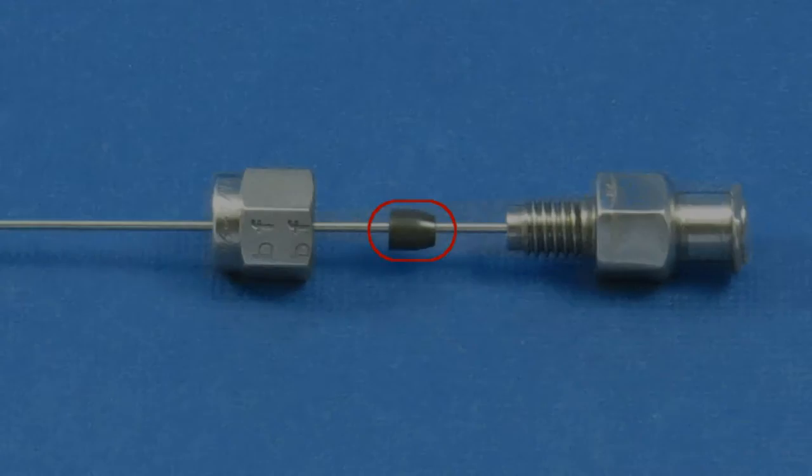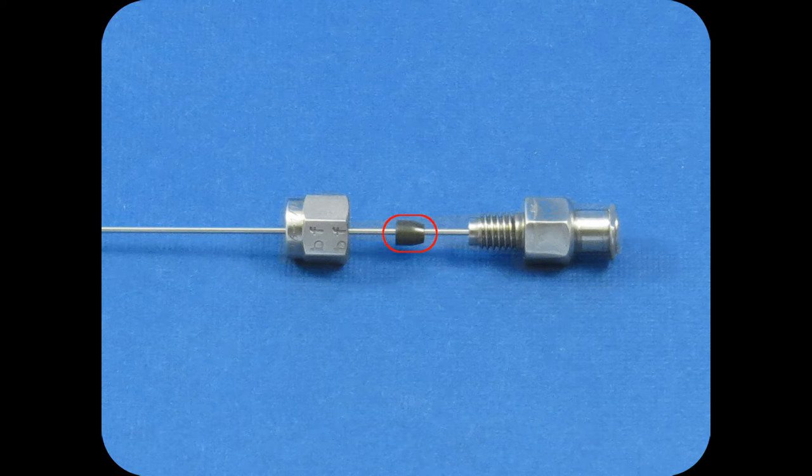Then, choose the correct hypodermic tubing adapter ferrule to make the connection. Remember, not all sizes of hypodermic tubing can be used with all ferrules, so if you have any questions about which one to select, our hypodermic tubing adapter ferrule video gives more details and is linked below.